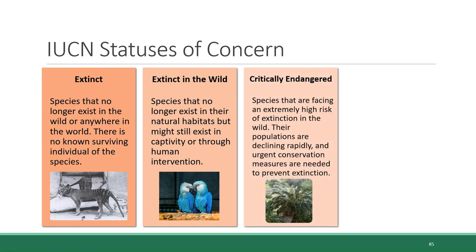Then there is the category critically endangered. These are species facing an extremely high risk of extinction in the wild — their populations are declining rapidly and urgent conservation measures are needed to prevent extinction. The Albany cycad, a plant endemic to the Eastern Cape region of South Africa, is in this category. This species only has 70 individual plants left as of July 2023, according to the IUCN.